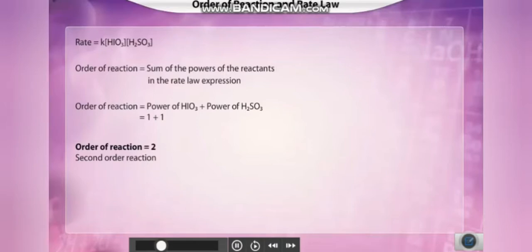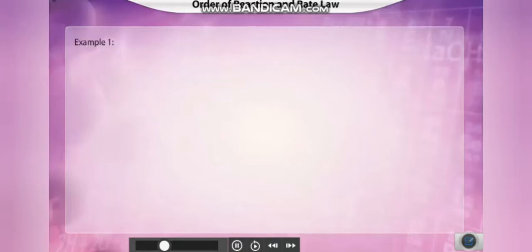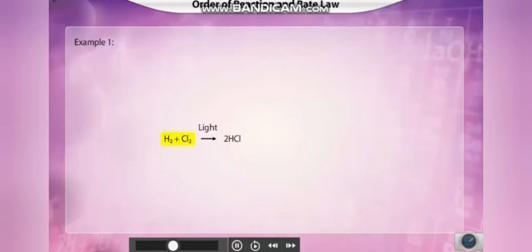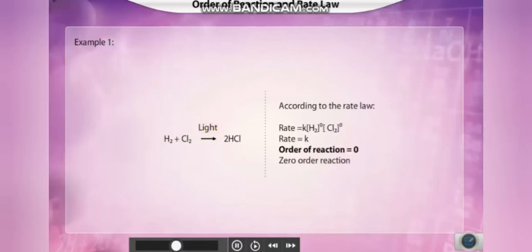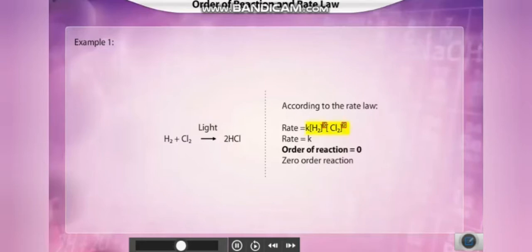Let's go over some more examples. Consider the formation of hydrogen chloride. Being a photochemical reaction, the rate does not depend on the concentration of reactants — rather, it depends on the amount of light absorption. The rate is independent of reactant concentration, so the order of reaction is zero — termed a zero-order reaction.